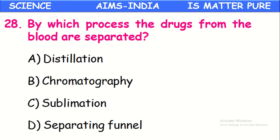By which process are drugs in the blood separated? Drugs from a blood sample are separated by the process called chromatography. Components existing in very rare or very small quantities in a mixture can be separated by the technique called chromatography.